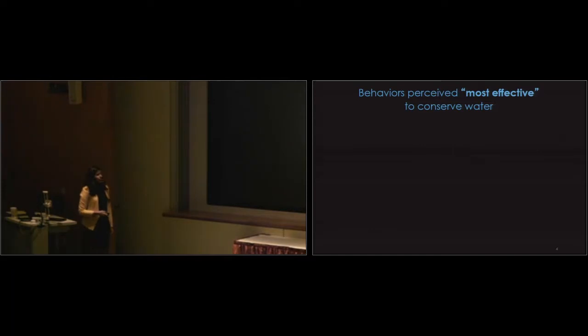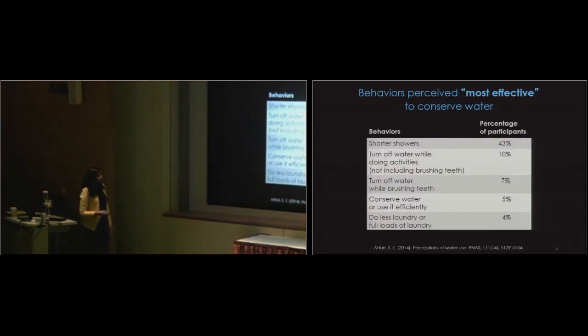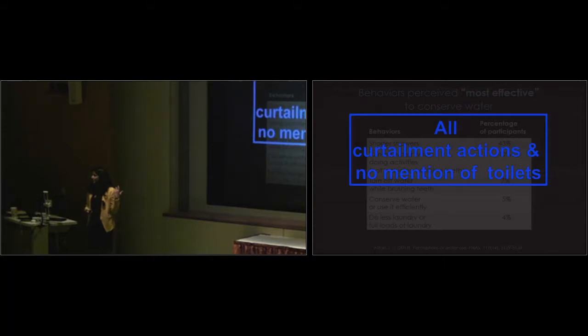So here are behaviors that are perceived most effective. This is what people think. Okay. So shorter showers, 43% of our participants. And this is an online sample of convenience, MTurk. We can talk about sampling if you'd like at the end. 10% said turn off water while doing activities not including brushing my teeth. 7% said turn off while brushing my teeth. Conserve water, use it efficiently which is a little bit vague. And do less laundry or fill loads of laundry. What do you notice about these behaviors? Roughly 70 to 73% are these actions. What are the common commonalities across these behaviors? Every day. Sort of. Every day. Yeah. The every day activities. What else? Yeah. They're all to do with like turning off. Yeah. Exactly. Exactly. So all of these are curtailment actions and there's no mention of toilets. Right? And toilets are sexy. So let's talk about toilets for a second.